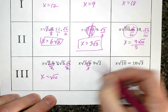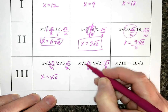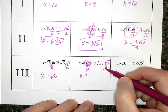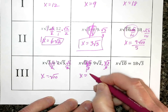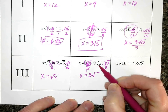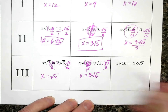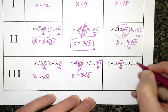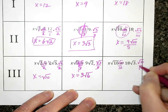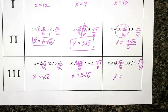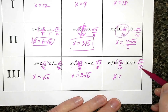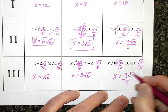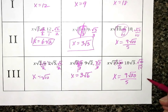Multiply by square root of 3 over 3 because I want that coefficient to be 1. Then for the last example, multiply by square root of 10 over 10. That gives 1x on the left. On the right, 18 and 10 simplify to 9 on top and 5 on the bottom, and multiplying the square roots together gives square root of 30, which cannot be simplified — so that's the final answer.